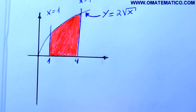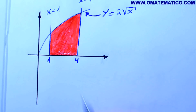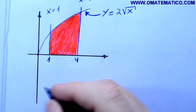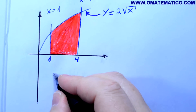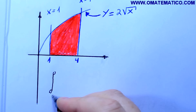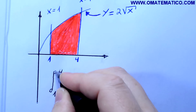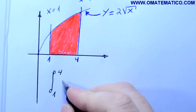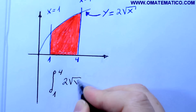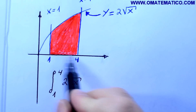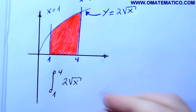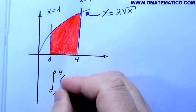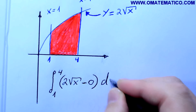Eu já passei a limpo aqui agora, então nós vamos fazer o cálculo. A área limitada por esta região, por estas curvas — esta área vermelha, de 1 a 4 — a limitação superior é 2 raiz de x, menos a limitação inferior que é 0. Vou colocar o menos 0 só para ser didático. dx.